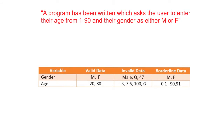For the gender option, we would say valid data would be M or F, as that is what was stated in the problem. Valid data for age would be 20 or 80 — that is any value from 1 to 90.